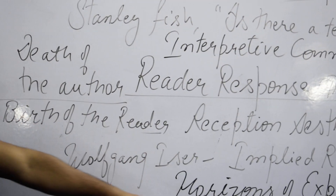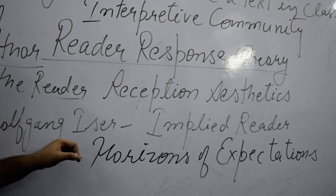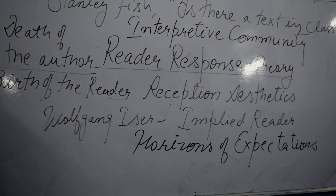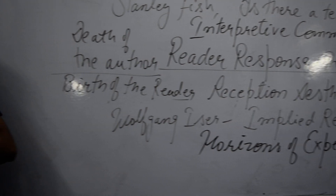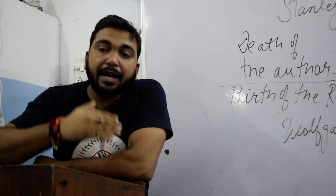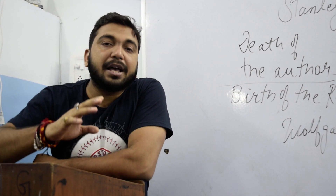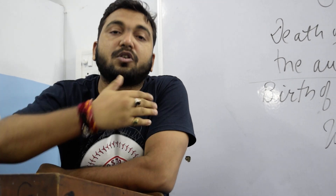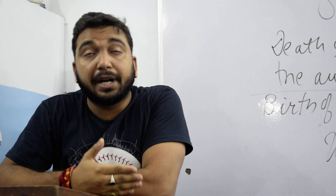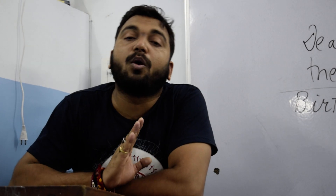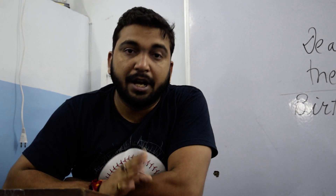The next term is Implied Reader, a term by Wolfgang Iser. He is of the view that when a writer writes, they always have in mind an ideal reader. When a writer encodes messages, they want to be understood to the core. However, it becomes apparently impossible to actually have that implied reader. The implied reader can also be called the ideal reader.